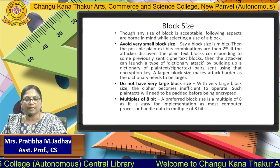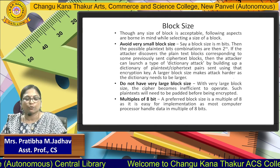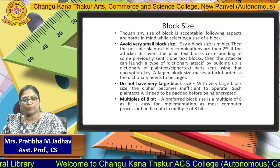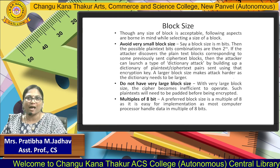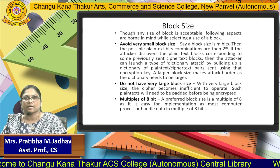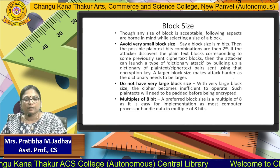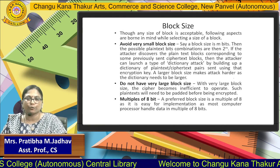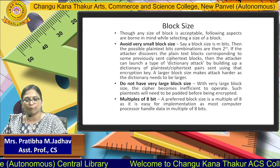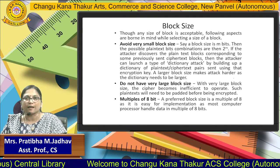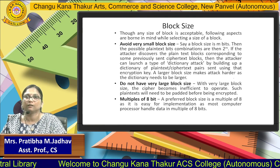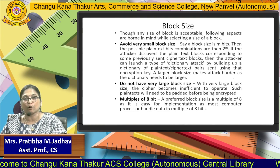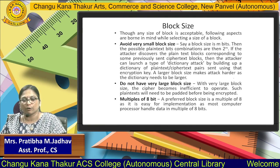Do not have a very large block size. Whenever you are going to use these block ciphering techniques, it should be 2 raised to M, but the block size should be below 1024 bytes. Then, multiple of 8 bits — whenever you are creating any block size, it should be a multiple of 8 bits. For example, if there are 64 bits, then there will be 8 blocks — that is 8 into 8 equals 64. So 8 blocks will be created for 64 bits.